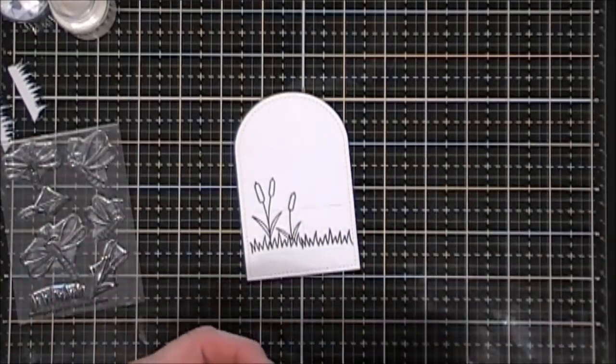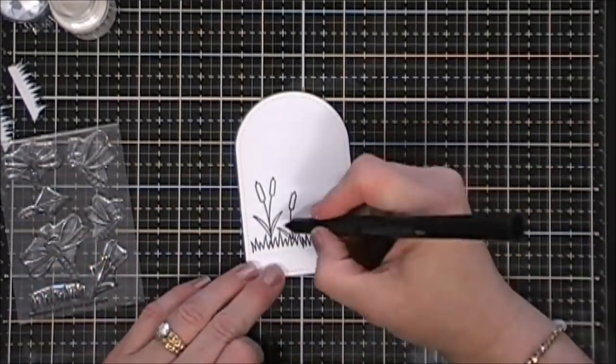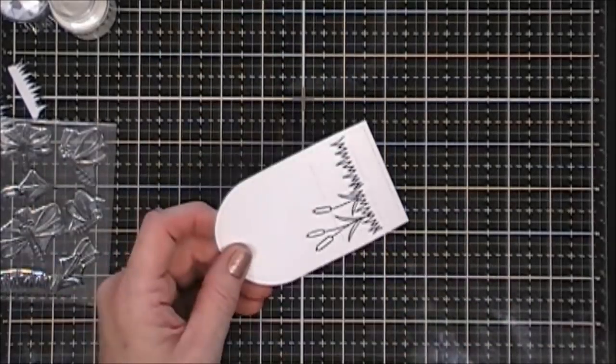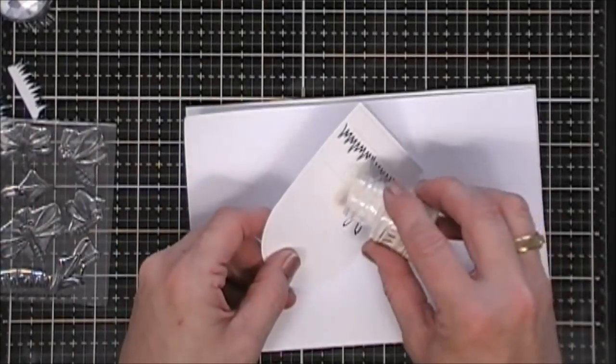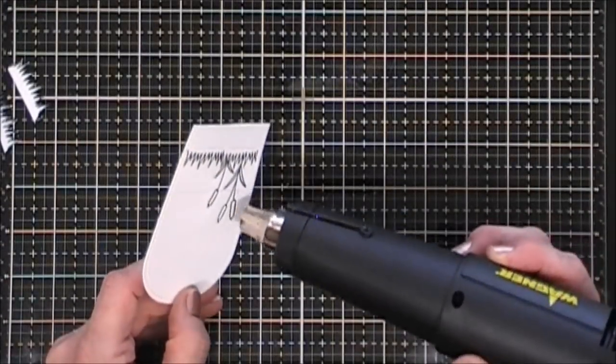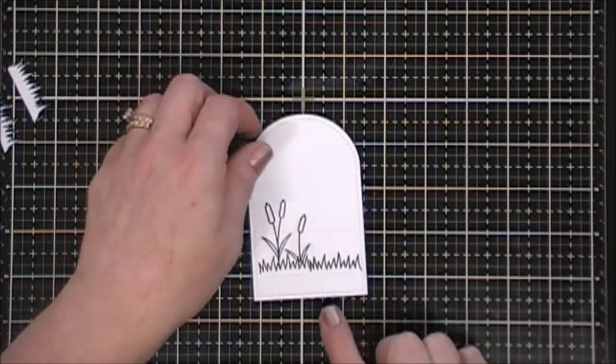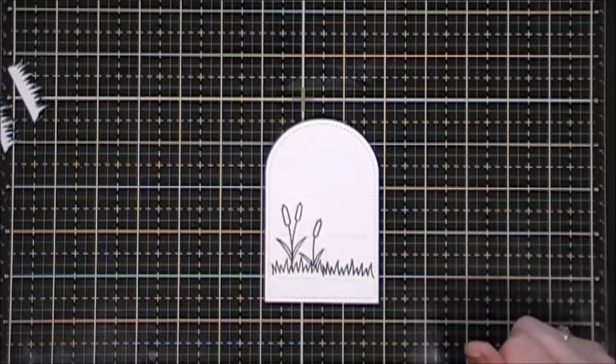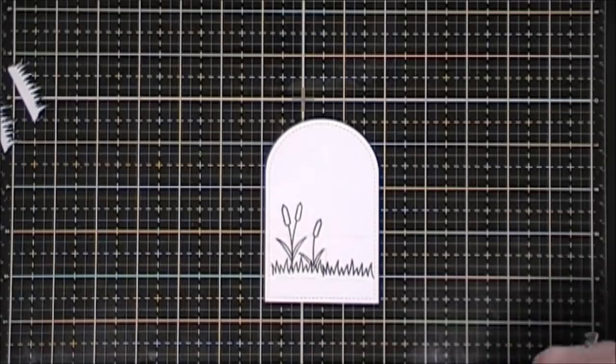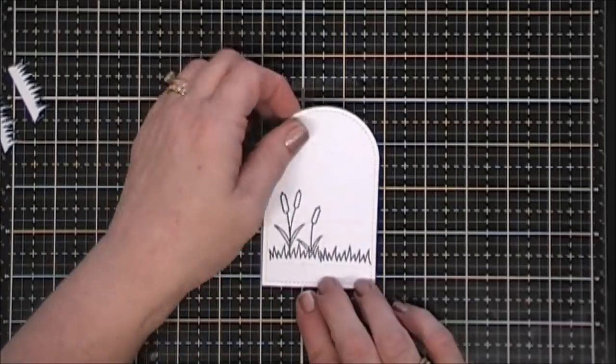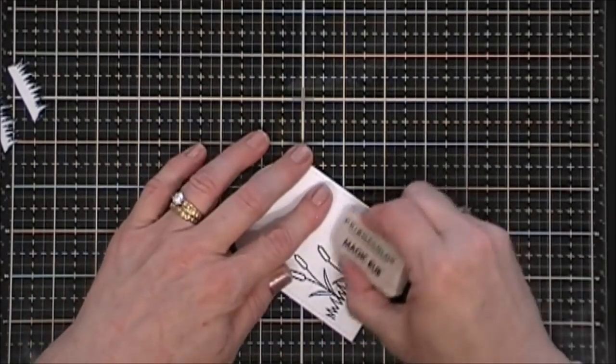I'm going to go over my foxtails with some clear embossing powder. To fix the fact that my willows or foxtails were floating in the air, I used my black marker and then went over my marker with my VersaMark so embossing powder would stick to it. I just melted that embossing powder.